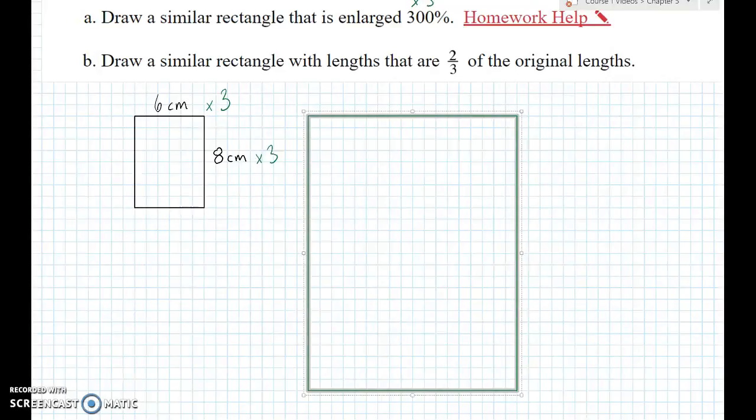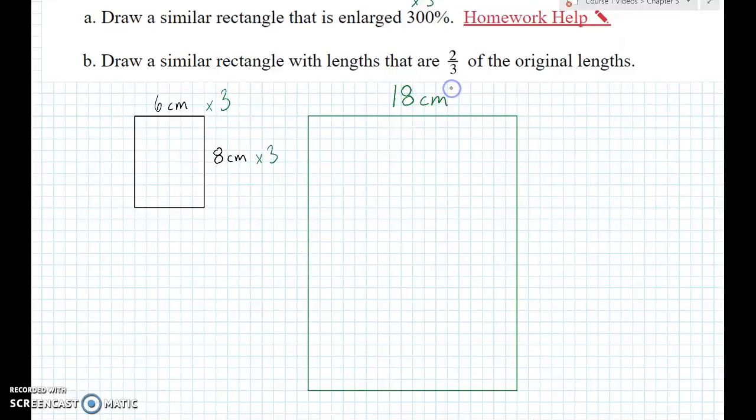So, I freaking nailed it. This is 18 cm, 300% of 6 cm, and 8 cm - 300% of that is 24 cm. So that's the enlargement.